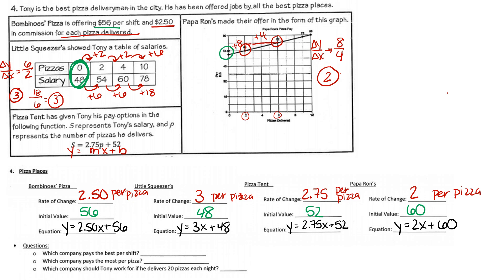Now we compare all the companies. Question one: which company pays the best per shift? That's the initial value — who pays the most when he comes into work? That would be Papa Ron's at $60. Question two: which company pays the most per pizza? When selling pizzas, he'd want to work at Little Squeezers, because they pay $3 per pizza.